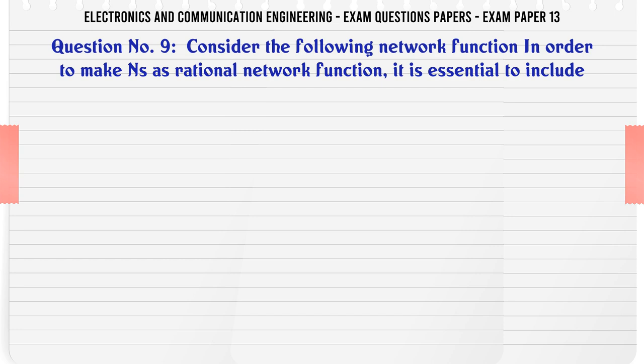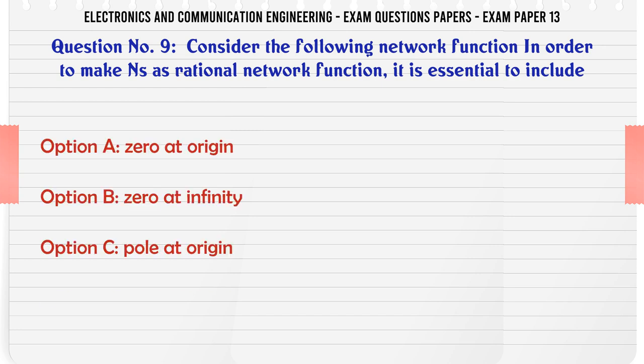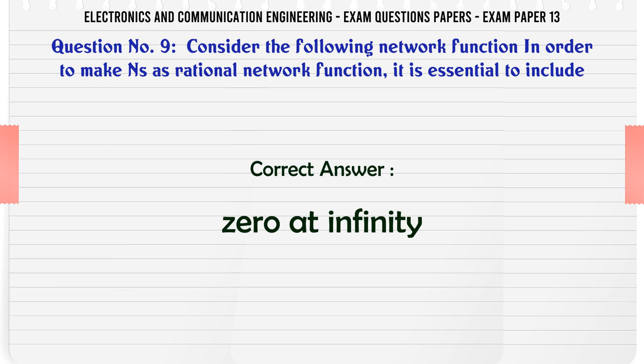Consider the following network function. In order to make it as rational network function, it is essential to include: A: zero at origin, B: zero at infinity, C: pole at origin, D: pole at infinity. The correct answer is zero at infinity.